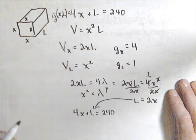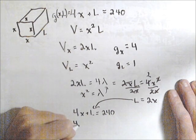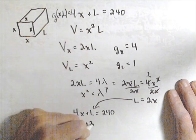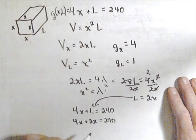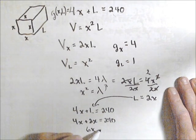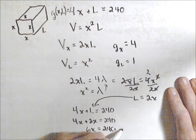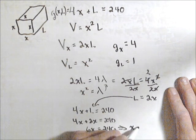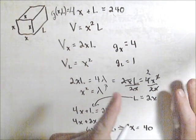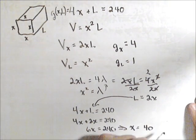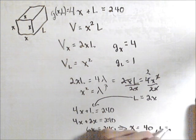So let's sub that into our constraint. So 4x plus 2x equals 240. So we get 6x equals 240, or dividing, we get x equals 40. We also know that L is double x, so that means L has to equal 80.